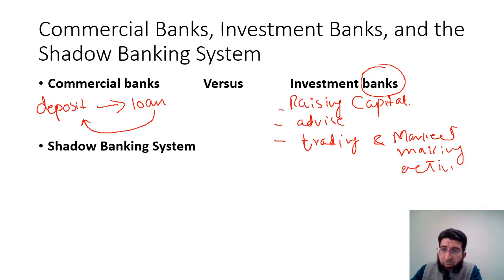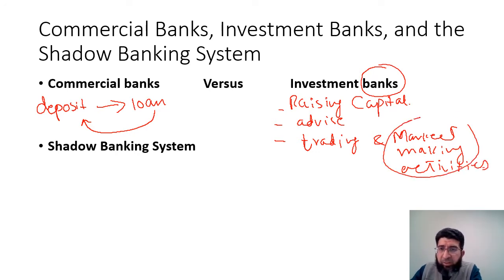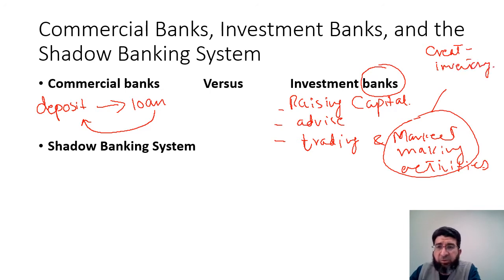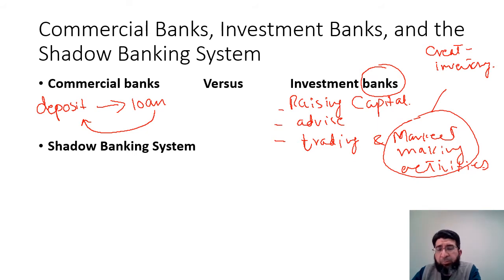Investment banks also engage in trading and market-making activities. In market making, the investment bank buys a stock and creates an inventory of that stock — for instance, Microsoft — and maintains that inventory. Whenever someone wants to buy the stock, the investment bank takes the opposite position and sells it. The difference between the bid and ask price is the spread that the investment bank earns on market-making activities.